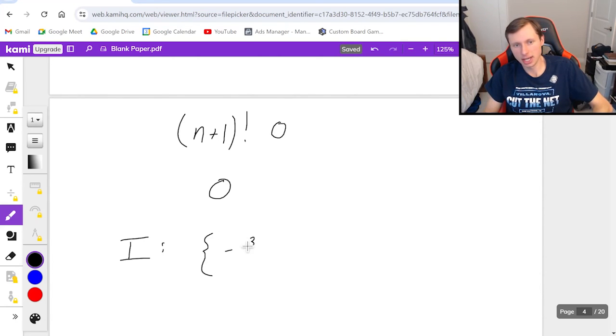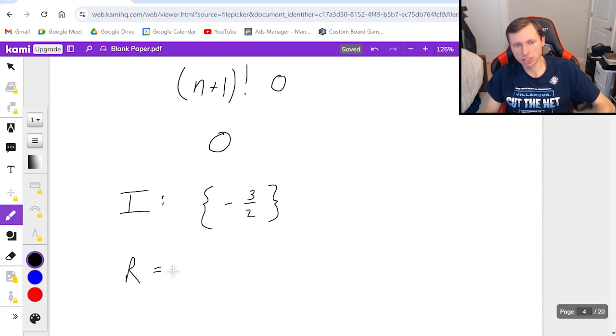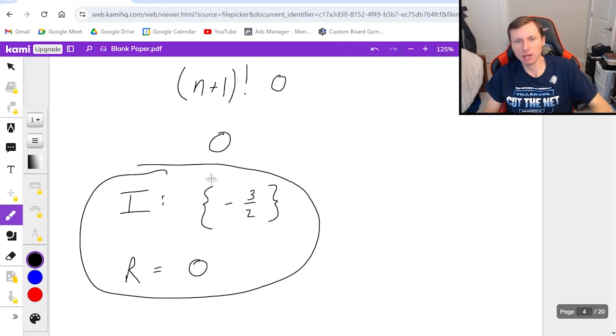The single point is negative three halves. And because it's a single point and not an interval that's when you use curly brackets in math. And then the radius of convergence you would say that is zero. That's what you say every time when you have something like this happening from your ratio test.